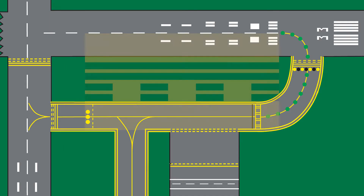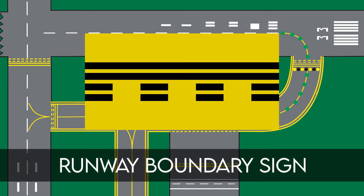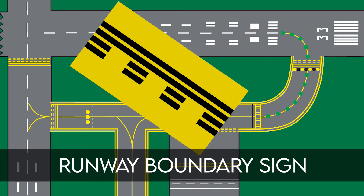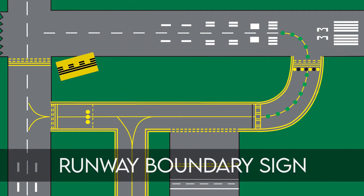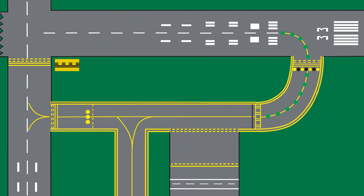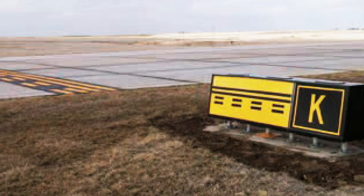Runway boundary signs have a yellow background with black text and a graphic depicting the pavement holding position marking. This sign faces the runway and is visible to the pilot exiting the runway, located adjacent to the holding position marking on the pavement. It is intended to provide pilots with another visual cue to help them decide whether they are clear of the runway.